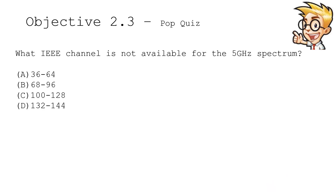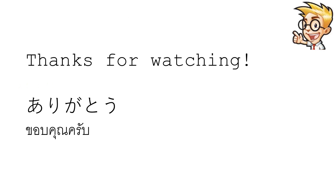We're at the end of Wireless Networking Technologies. Here's a question about spectrums: What IEEE channel range is not available on the 5 gigahertz spectrum? A) 36 to 64, B) 68 to 96, C) 100 to 128, or D) 132 to 144? The answer is B, 68 to 96 — that red area is not available at all. Thanks for watching!